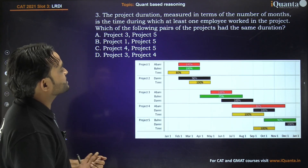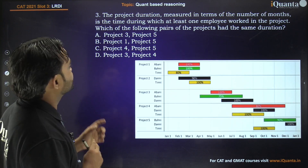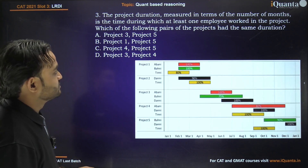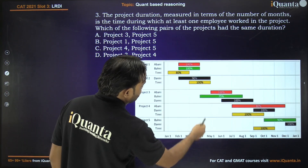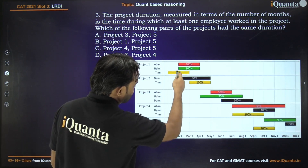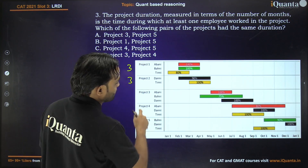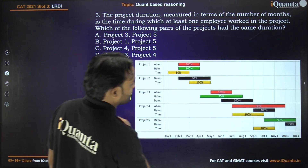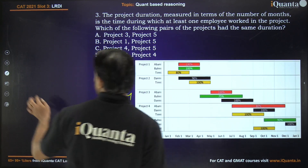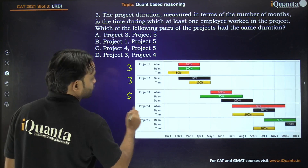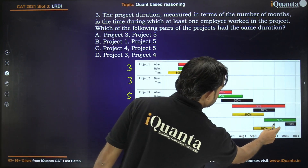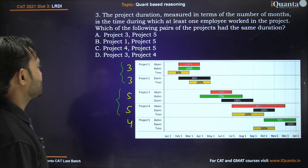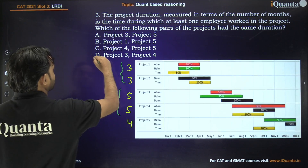Question 3: The project duration, measured in number of months, is the time during which at least one employee worked in the project. Which pair of projects had the same duration? Project 1 started in January and finished on 31st March — that's 3 months. Project 2 started on 1st February and finished on 30th April — also 3 months. Project 3 has a duration of 4 months. Projects 4 and 5 also have durations of 5 and 4 months respectively. We have two pairs with equal durations, but among the options only projects 3 and 4 is given, so we choose option D.